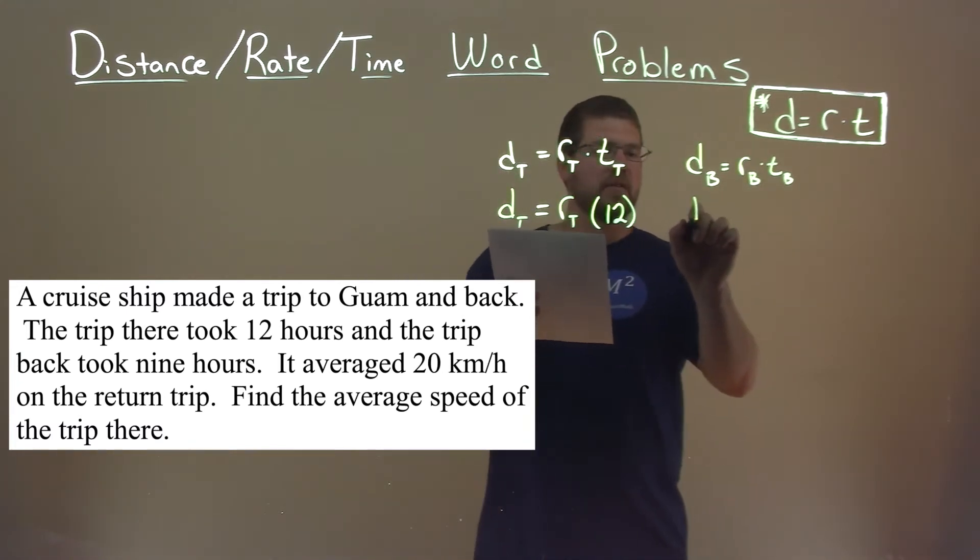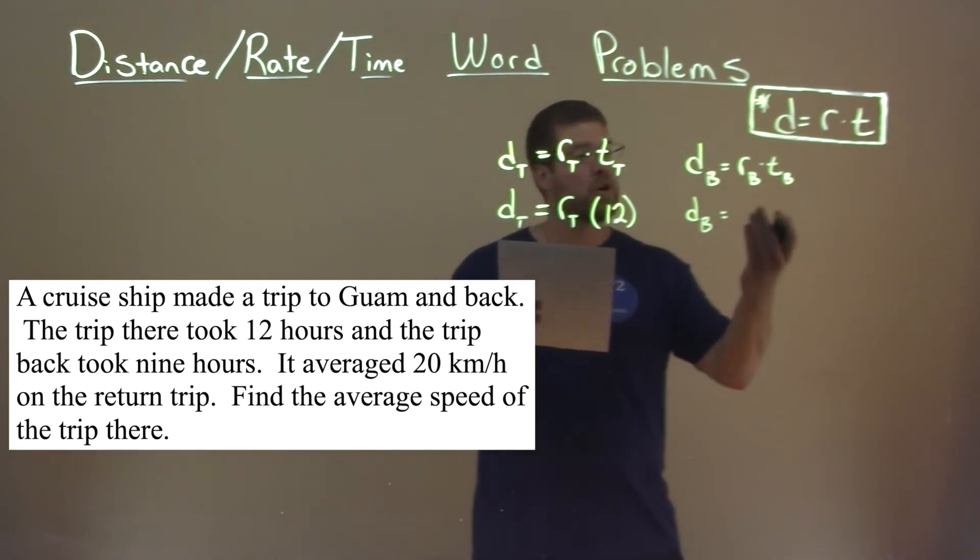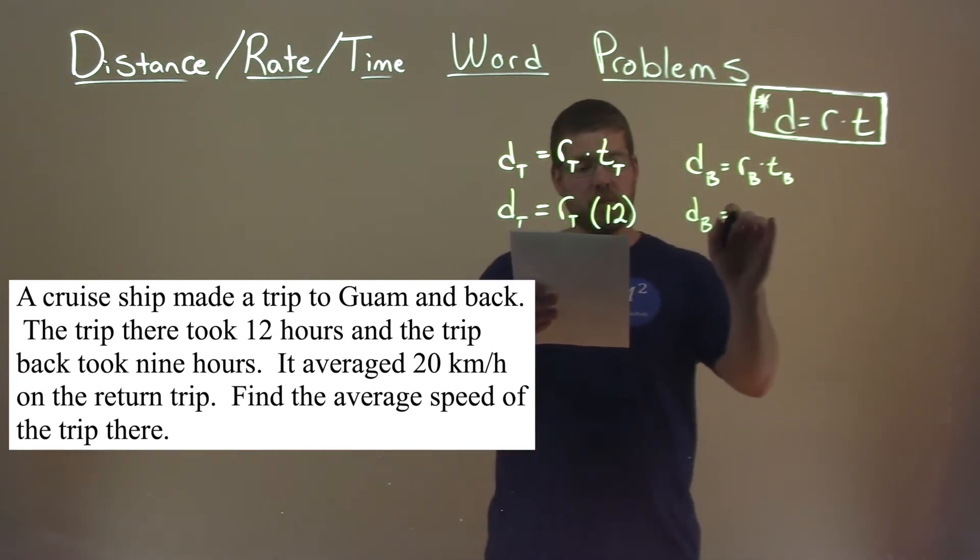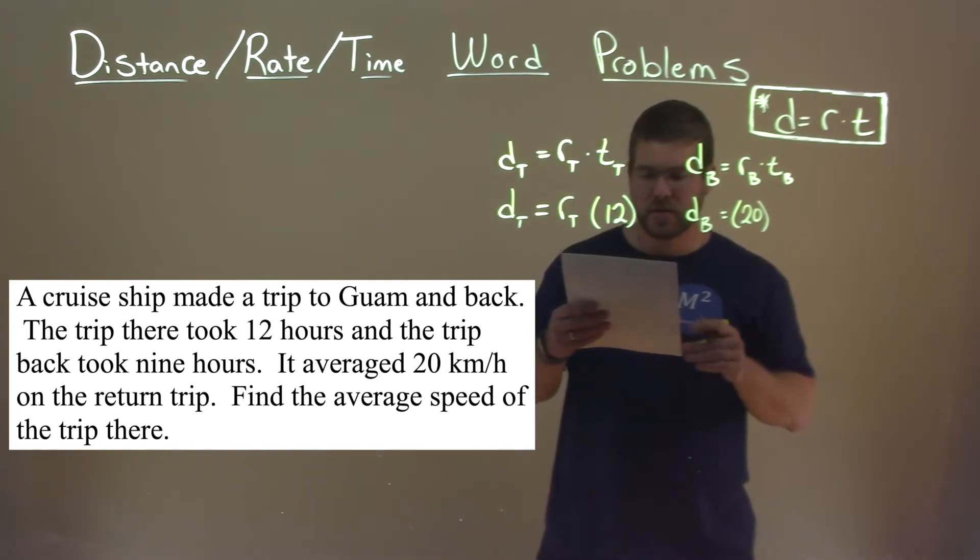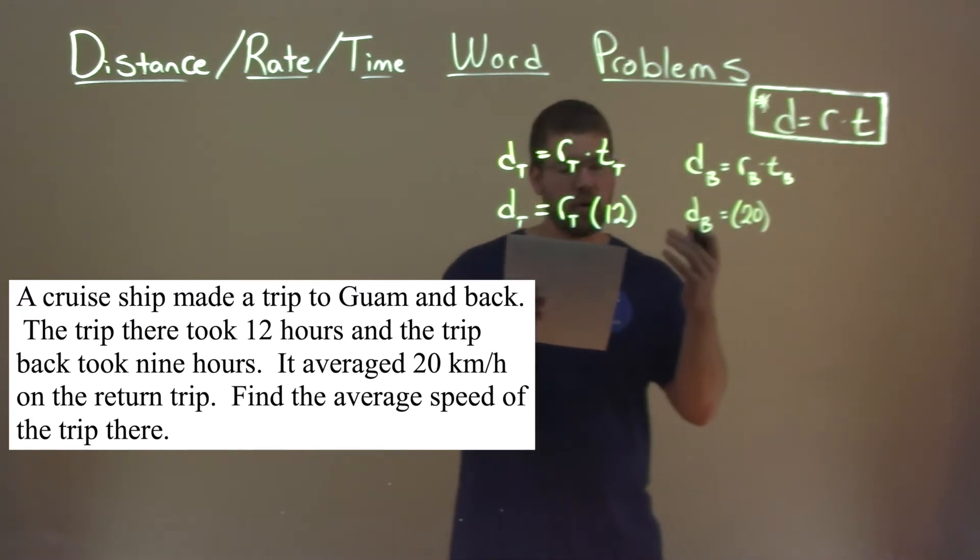So d_b, what does that equal? Well, they tell us that the return trip rate was 20 kilometers per hour. So we put a 20 here. And it took us 9 hours, right? Yeah, the return trip home, trip back home, took 9 hours.